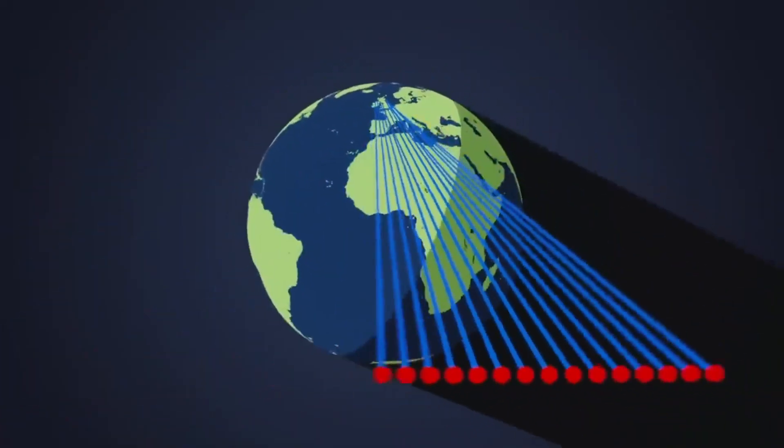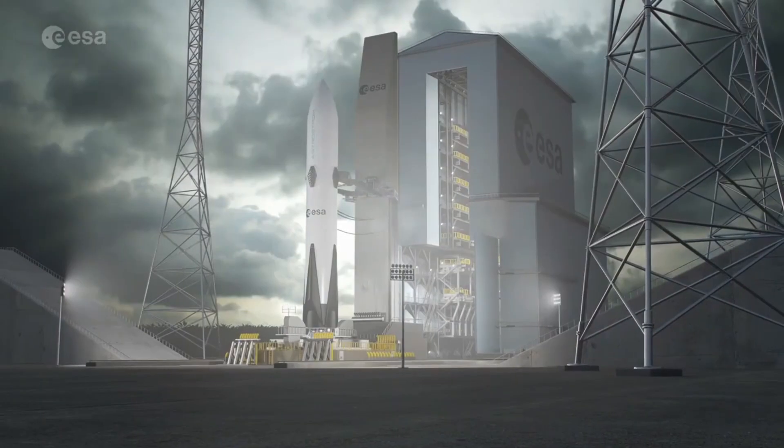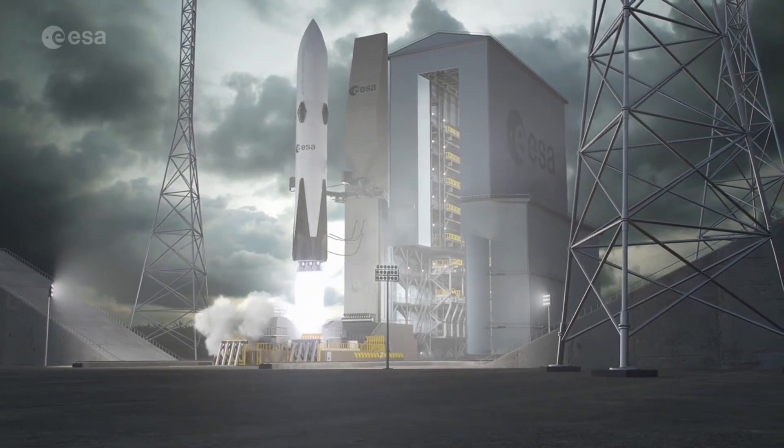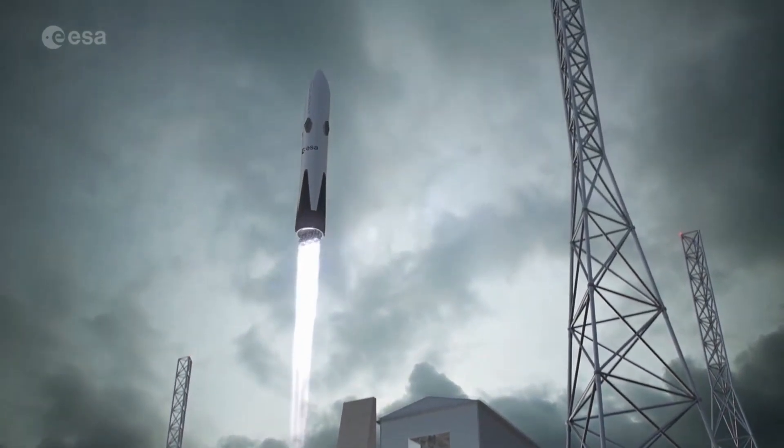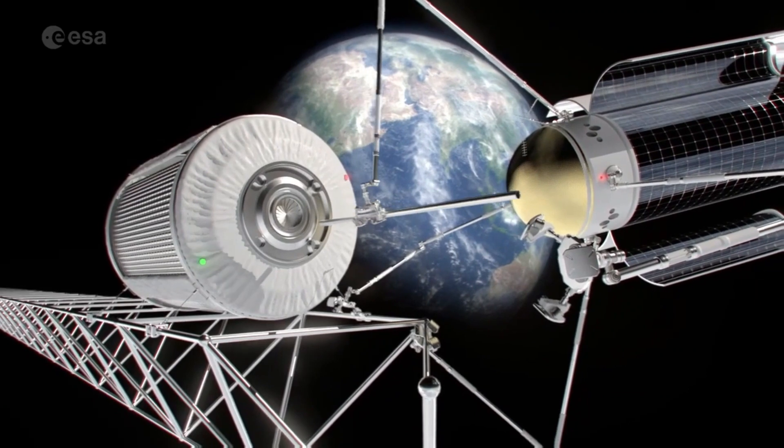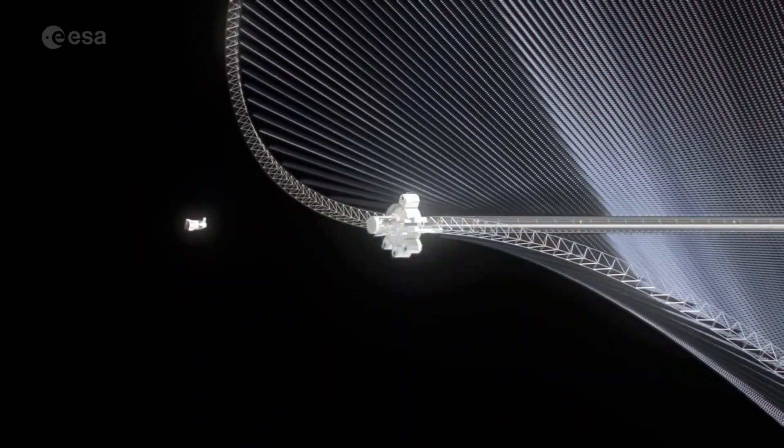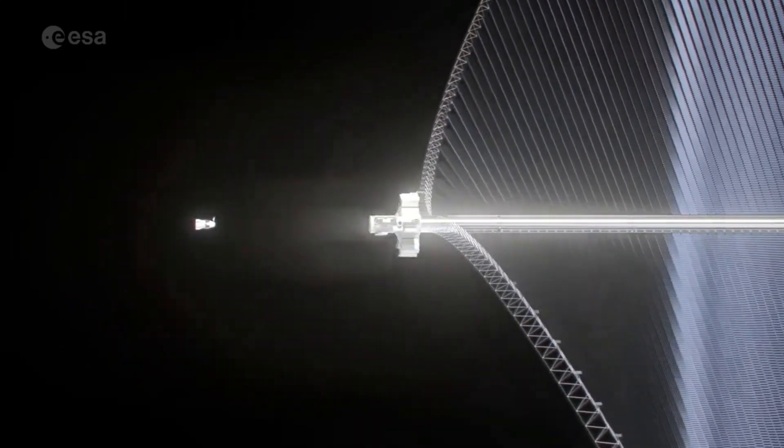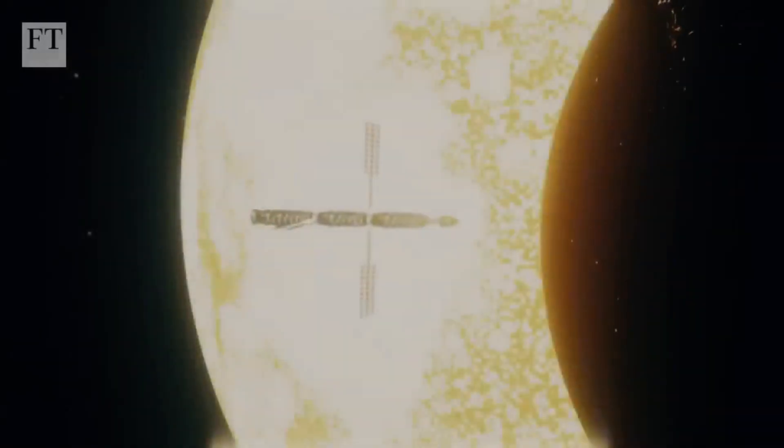The two main challenges are getting the solar panels into space, then getting the energy down here. One reason that SBSP is back on the agenda is the plummeting cost per kilogram of launching payloads into space thanks to reusable rockets. This figure has fallen nearly 20-fold in two decades while solar panels have become lighter. The UK, US, and Chinese governments are funding research while the European Space Agency ESA has approved a three-year study named Solaris.